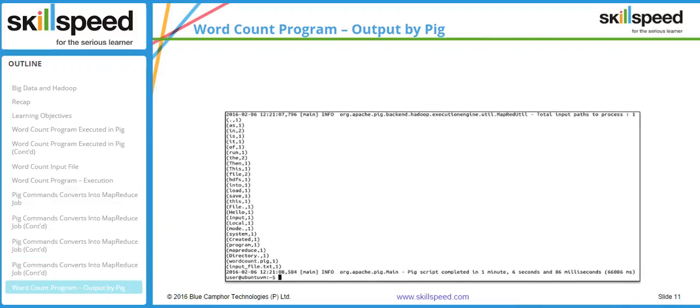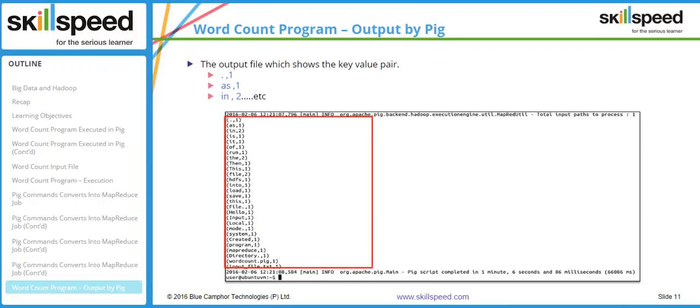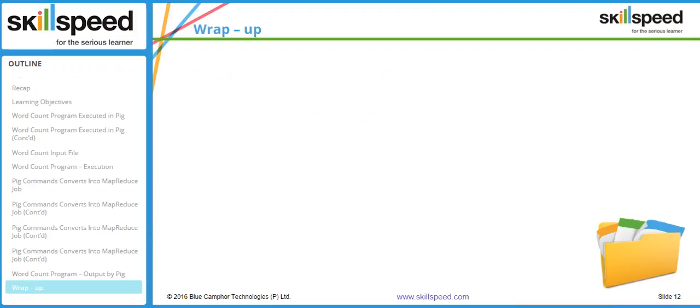At the end of the Pig operation, you can see that it will display the output on screen since we used the DUMP operator. As you can see, it has counted the number of occurrences of every word, and the result is positive. So in this particular lesson, we have learned how to run a Pig script which accomplishes the word count logic. That's all for this lesson.